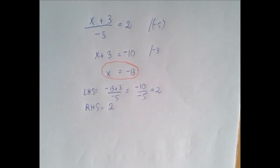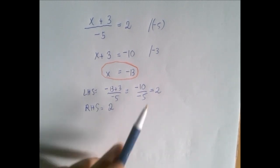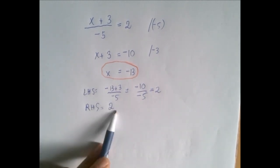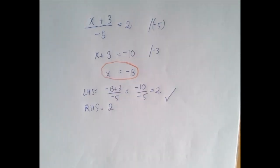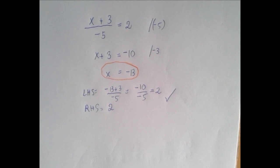When x is negative 13, the left-hand side and the right-hand side are equal. That is the same as saying that negative 13 is a solution of the equation. Thank you for watching.